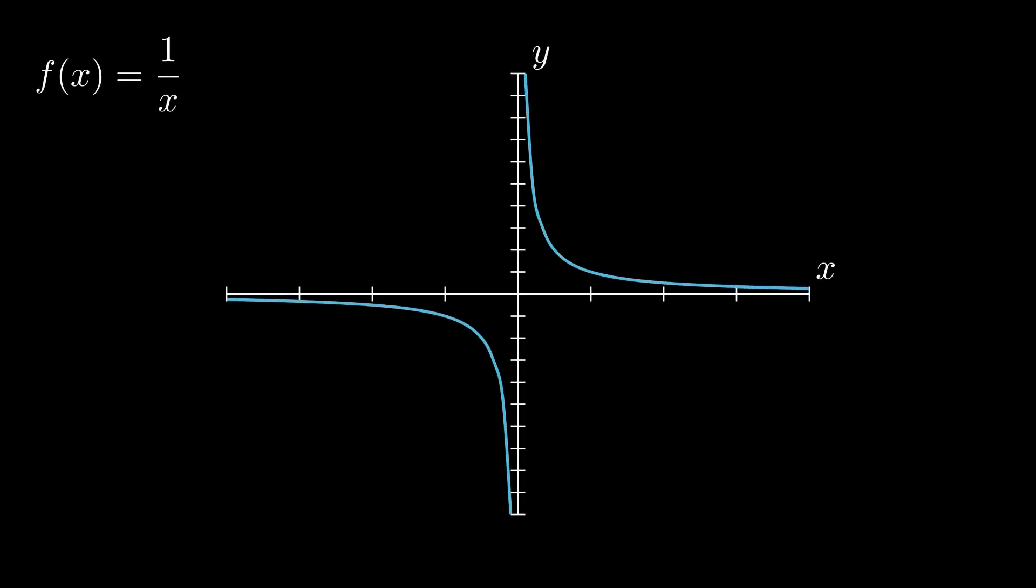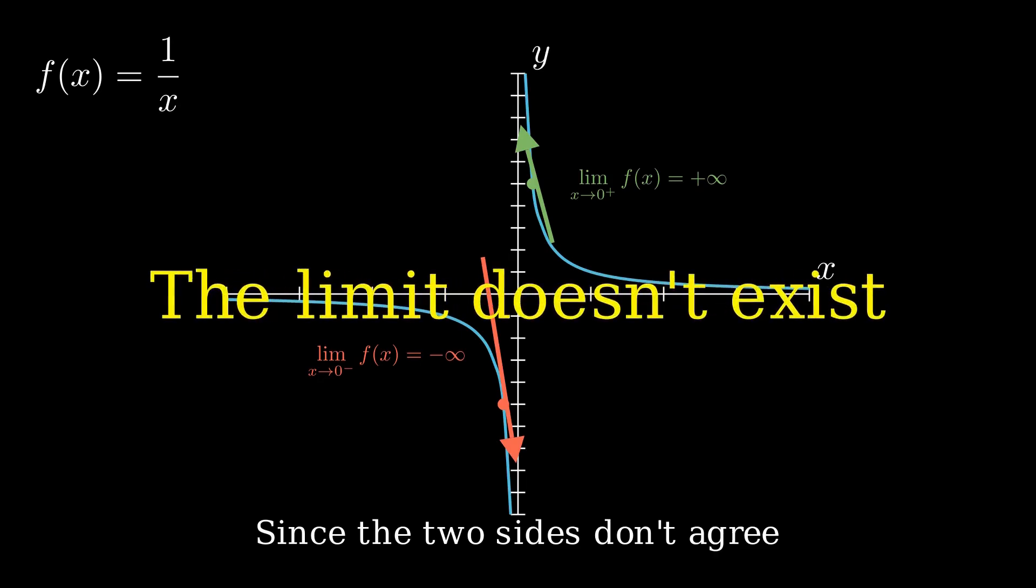Take f of x equals 1 over x. What's the limit as x approaches 0? From the right, f goes to positive infinity. From the left, it dives to negative infinity. Since the two sides don't agree, the limit doesn't exist in the usual sense.